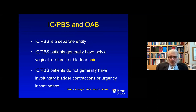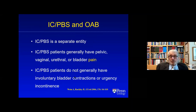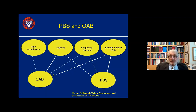What about interstitial cystitis? That's a separate entity — IC/PBS. IC/PBS patients generally have pain, which can be in the pelvis, vagina, urethra, or perceived in the bladder. IC/PBS patients generally don't have detrusor overactivity or urgency incontinence. Are there people who have both? Yes. Paul Abrams, Phil Hanno, and I came up with this simple diagram, and by and large it's true — though some cases don't fit exactly.